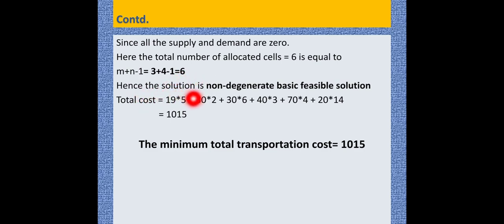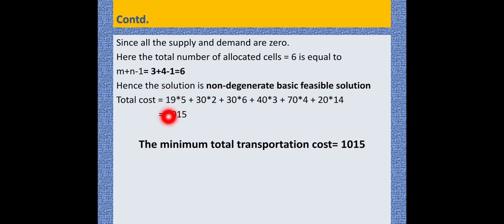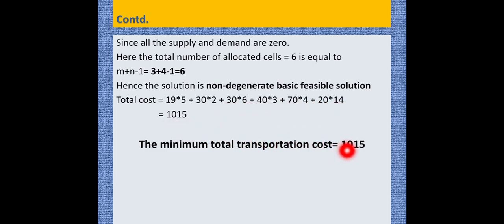The total cost is calculated by multiplying the cost matrix value at each allocated cell by the number of units allocated there. Solving this gives a total transportation cost of 1015.